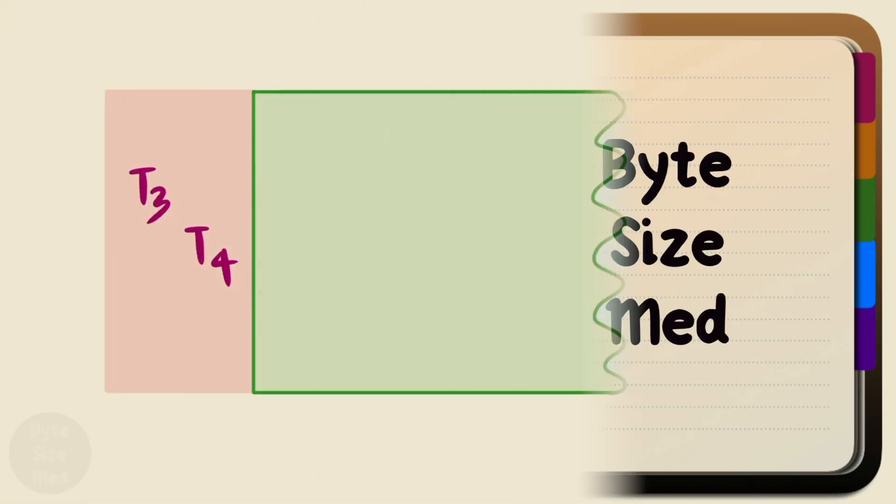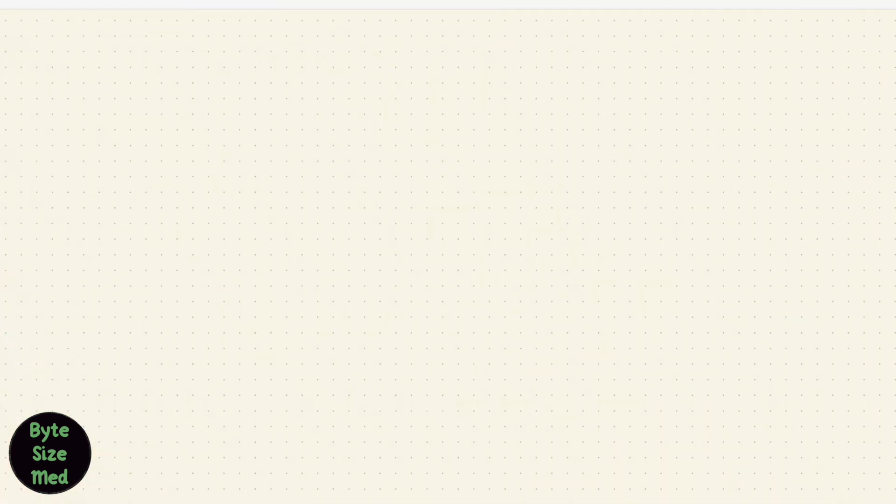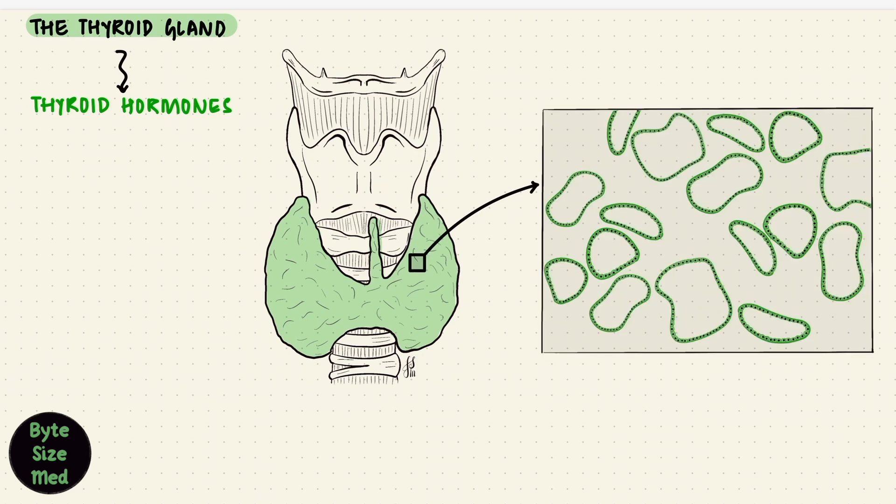Hello, welcome to Bite Size Med. This video is on the steps of thyroid hormone synthesis. The thyroid hormones are obviously synthesized by the thyroid gland. The gland is structured in a manner that fits the job description. Microscopically, the parenchyma consists of lots of follicles.